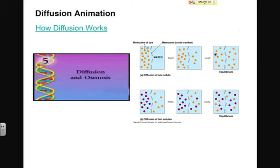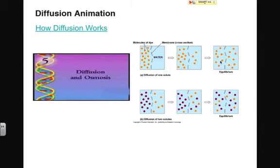Diffusion looks like this: in this example, we have molecules of dye on one side of a container dissolved in water, with water on the other side. Because of the collisions taking place between the dye molecules, eventually they bump into one another and spread out into the empty space. If we give this process enough time, there will be enough collisions on both sides so that the number of molecules on both sides of the membrane will be equal — and when that happens, we've reached equilibrium, where the concentration of particles is the same on both sides.